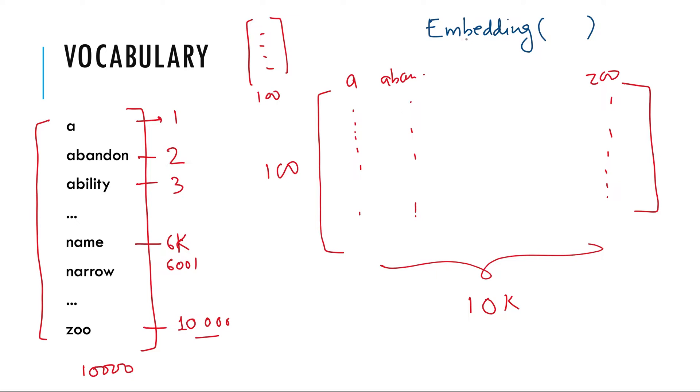which will give you the embedding matrix, but it needs integral representation of words. It will not take the words and give you the embedding matrix. First, you need to convert each word to some integer.